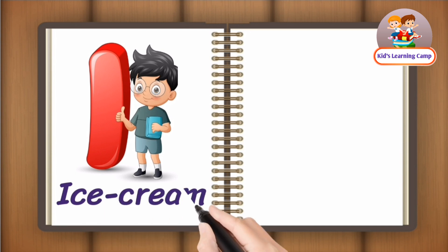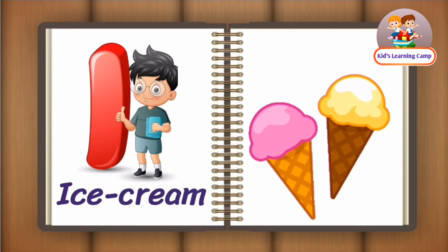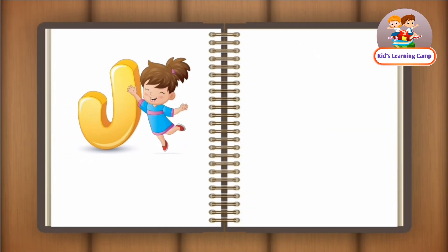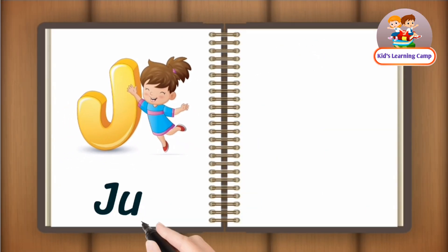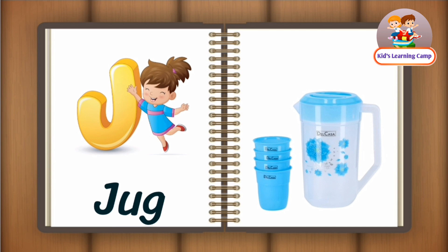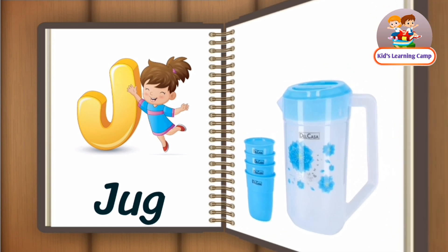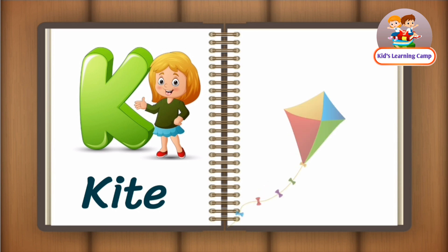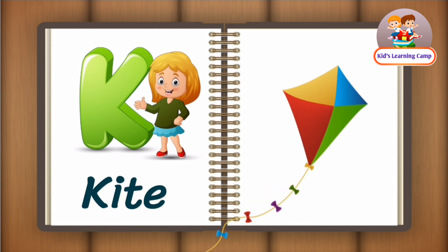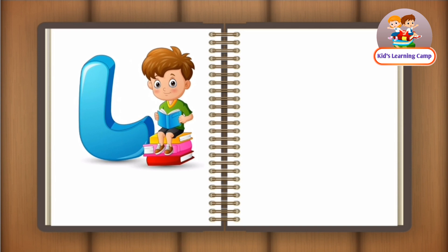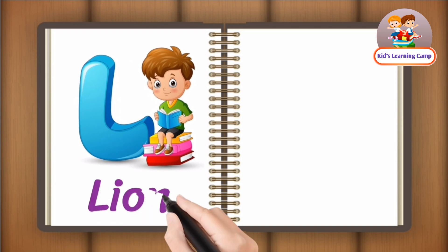I for Ice Cream. J for Jug. K for Kite. L for Lion.